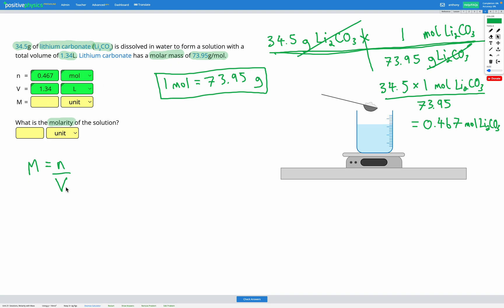Now we're ready to use our equation. We're trying to find molarity. Our equation is already set for molarity, so we don't need to rearrange it. We can just put our numbers in. The number of moles is 0.467, we're dividing by our volume which is 1.34, and if we put that into our calculator we'll get a molarity of 0.348. Let's check that in our answer box.